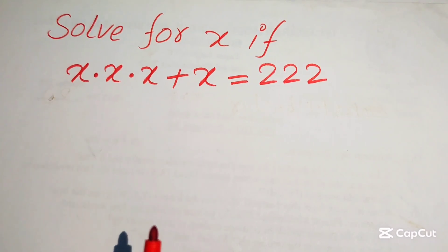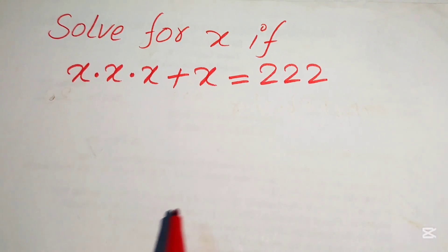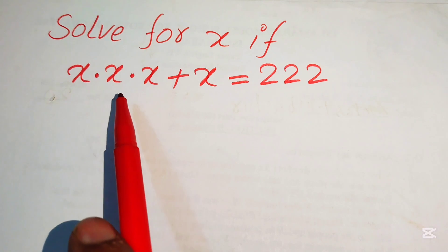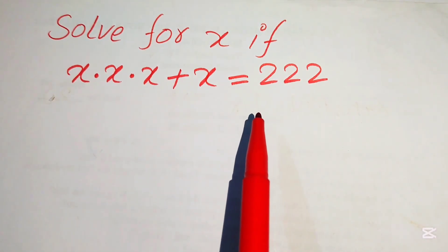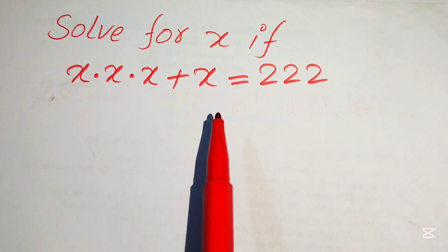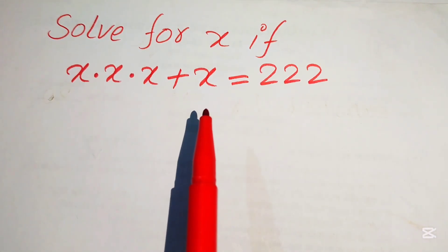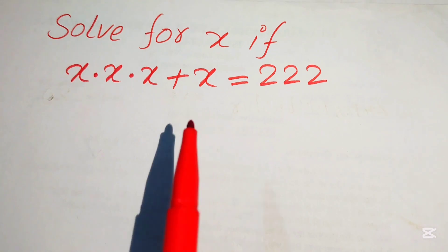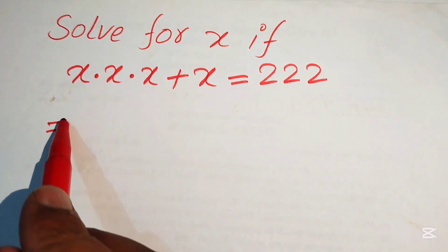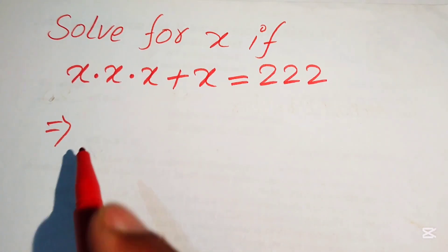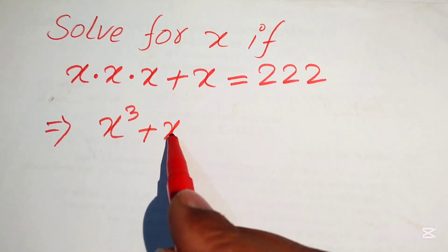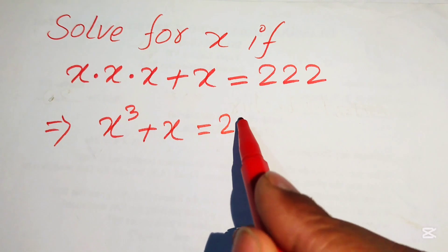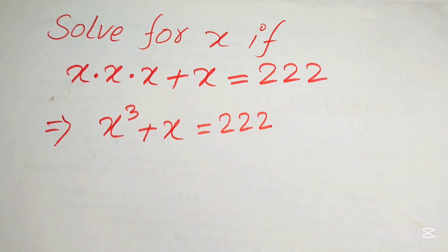Hello everyone, welcome. Let's solve this nice algebra problem. We have x times x times x plus x equals 222, and we solve for x. First we write this equation in standard form: x cubed plus x equals 222.